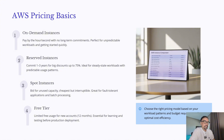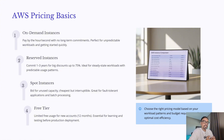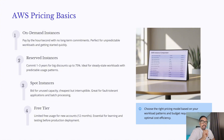Then we have spot instances. This lets you bid for unused AWS capacity. They are the cheapest option but the catch is they can be interrupted at any time, making them ideal for batch processing or fault-tolerant applications where interruptions aren't a big deal. Finally, there is a free tier which gives new accounts limited free usage for the first 12 months. It's an excellent way to learn, experiment, and test before moving into production. The key takeaway is to match your workload patterns with the right pricing model to achieve optimal cost efficiency.